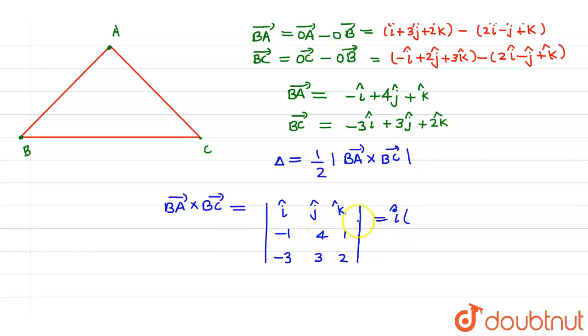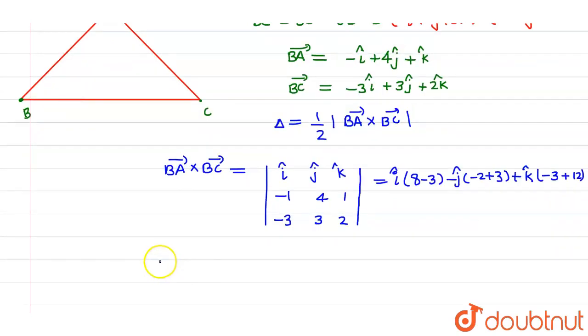then I will be getting i cap times of, this will be 8 minus 3, minus of j cap times of, this will be minus 2 plus 3, and at last, k cap times of, this will be minus 3 plus 12. So from here, the BA vector cross BC vector can be written as